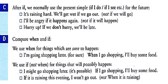Now for 'if': 'If you go out, you'll get wet' — it's raining hard. 'I'll be angry if it happens again' — not 'if it will happen.' 'We'll miss the bus if we don't hurry up.' Now let's compare 'when' and 'if': we use 'when' for things which are sure to happen.